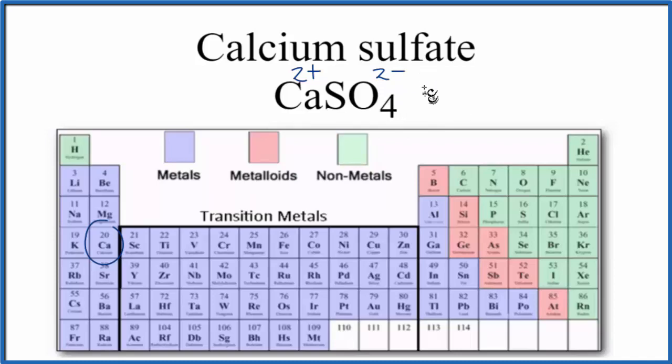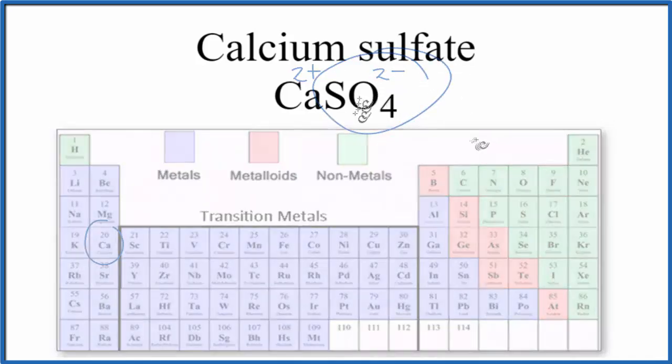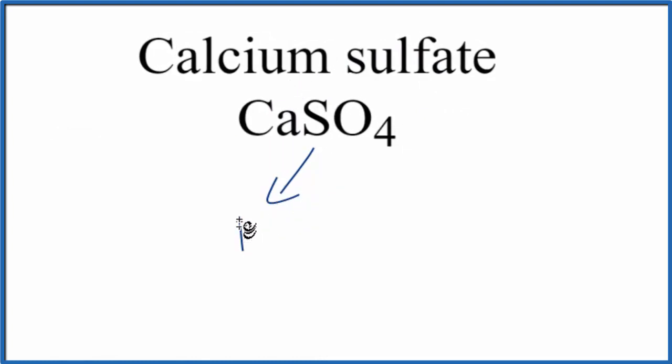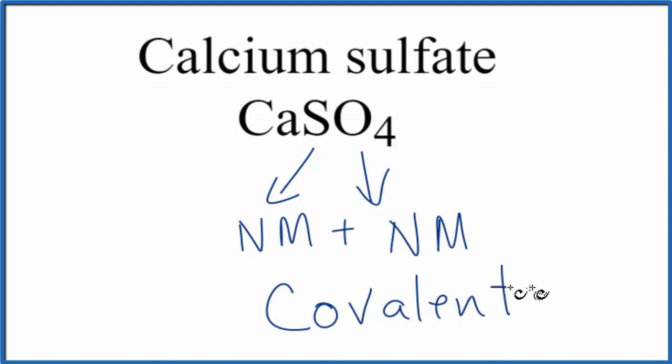Let's talk briefly about the sulfate ion. Sulfur is a nonmetal, and oxygen is also a nonmetal. Nonmetal plus nonmetal forms covalent bonds, also called molecular bonds.